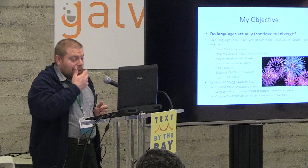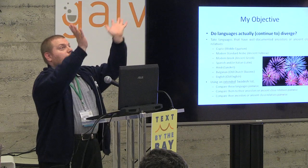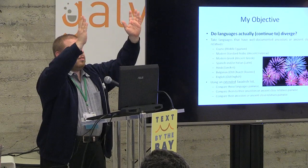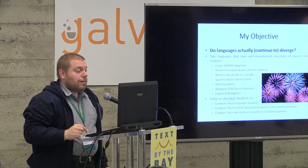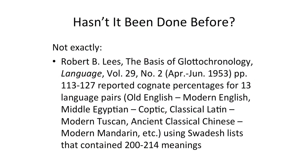Is the Tower of Babel diverging like fireworks, or actually converging as borrowings appear across modern languages? It's unlikely to slant in one direction. Either the Tower of Babel grows diverging, or converging, or in a strange quirk it would grow vertically — languages staying at the same distance from each other after they initially diverged. We don't know the answer, and the natural question is: hasn't this been done before? Not exactly.